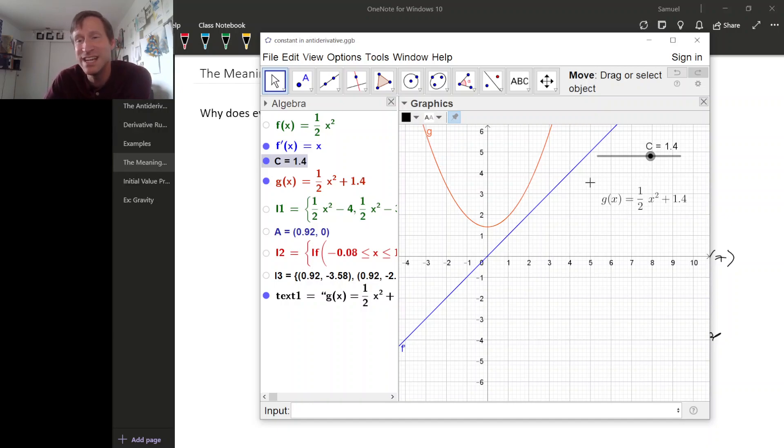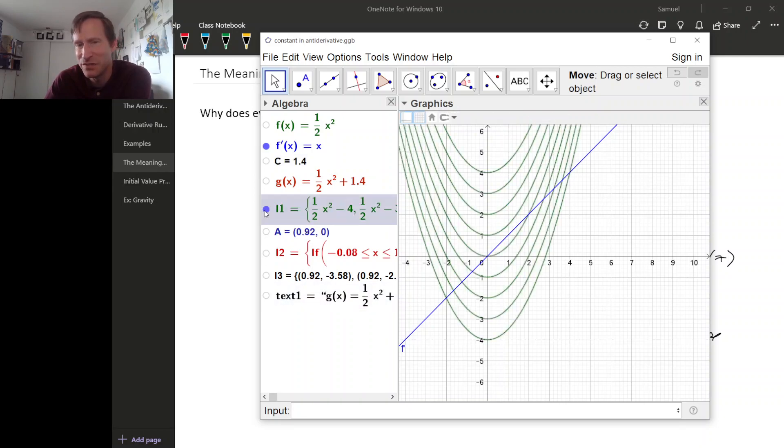This is a little easier to see if instead of looking at one antiderivative at a time, we actually look at many of them all at once. So here are many antiderivatives. These are all that same graph but just shifted up and down different amounts.